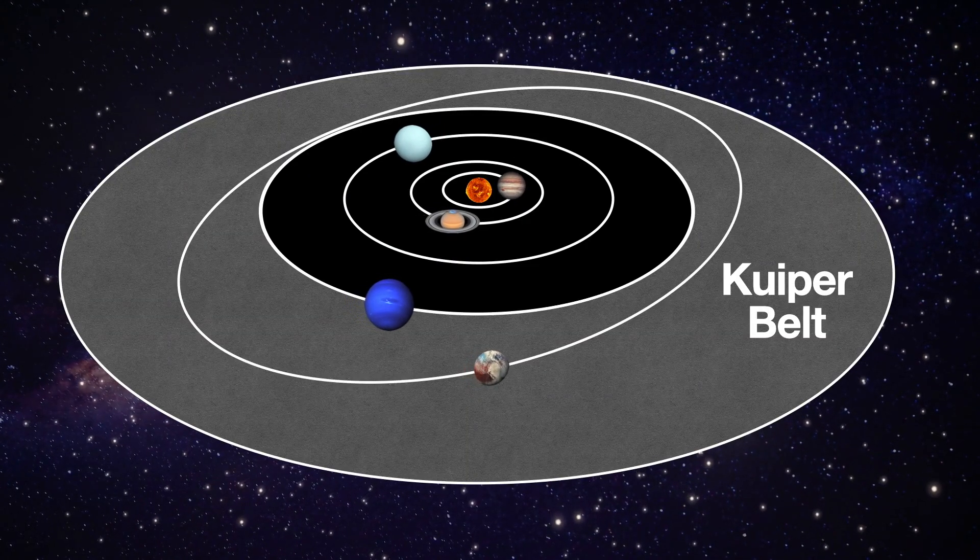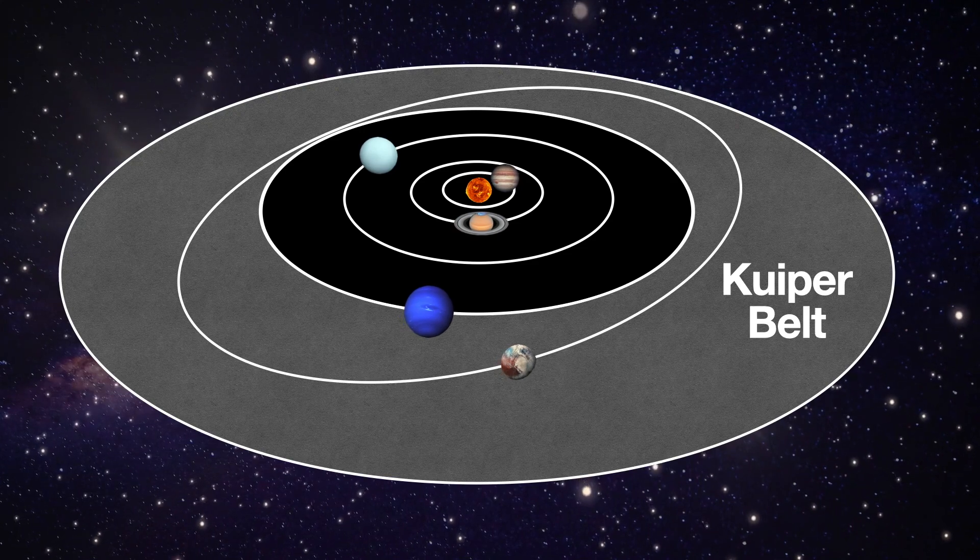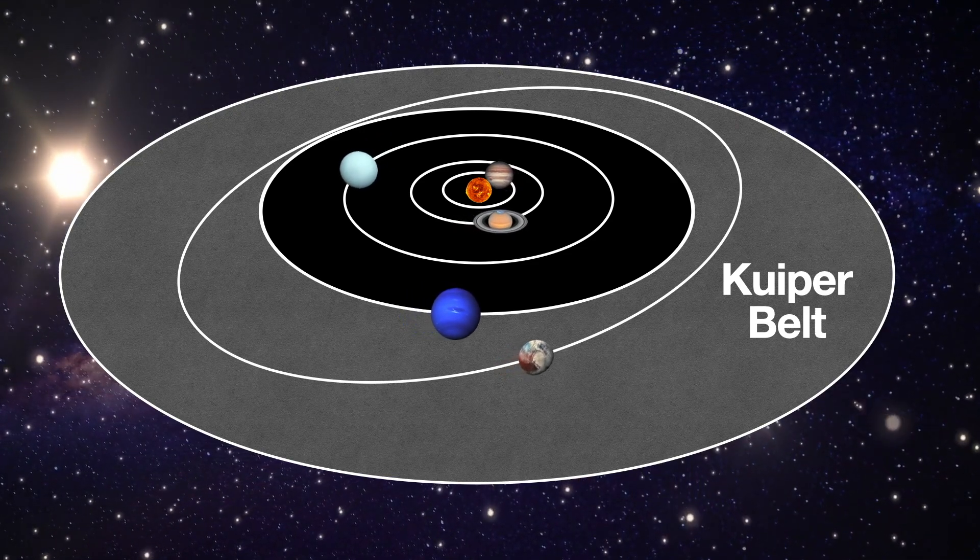Afterwards, New Horizons flew by a trans-Neptunian object called Arrokoth, which like Pluto is located in the Kuiper belt.